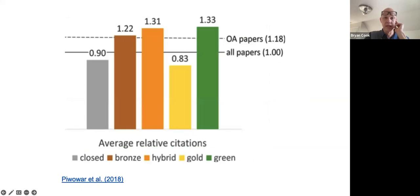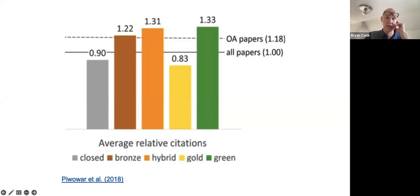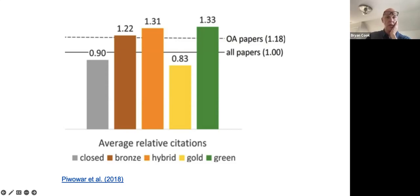Regarding the open access citation advantage: bronze, hybrid, and green all show much higher than average citation counts. Interestingly, gold does not show this advantage — the authors hypothesize this is because gold journals are often very small journals that aren't accessed very often, resulting in the lowest citation levels. Other ways of making papers open access seem to result in greater access and greater impact in citations.